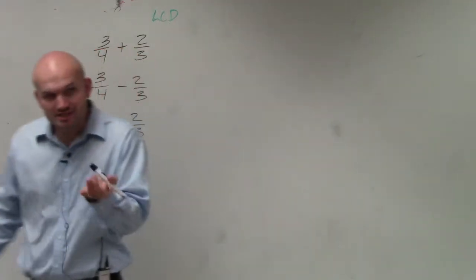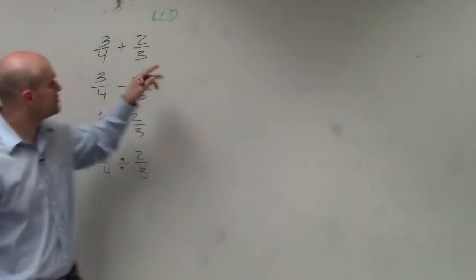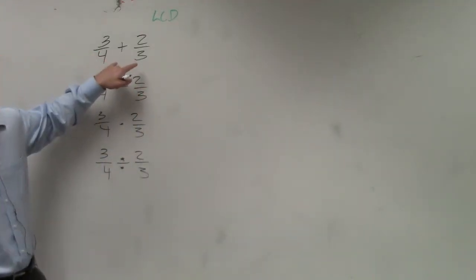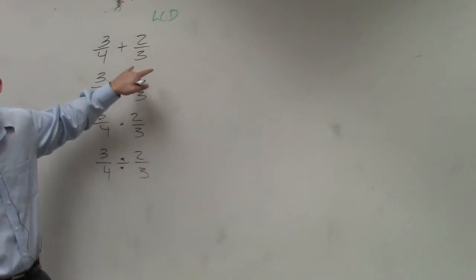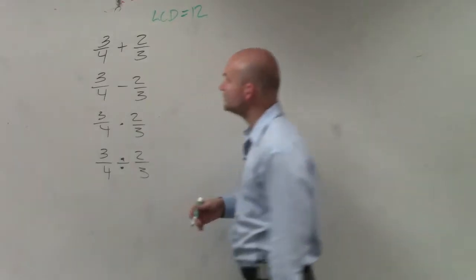The least common denominator is the smallest number that both of your denominators divide into. So we look at 3 and 4, and we say, what's the smallest number that 3 and 4 both divide into? And that number is twelve.